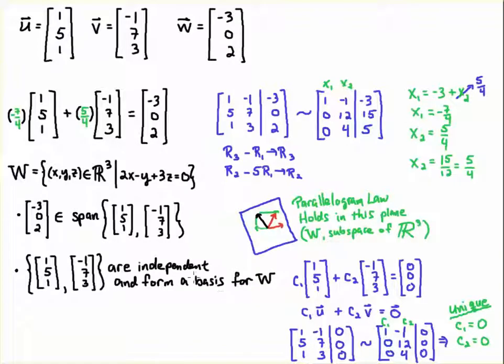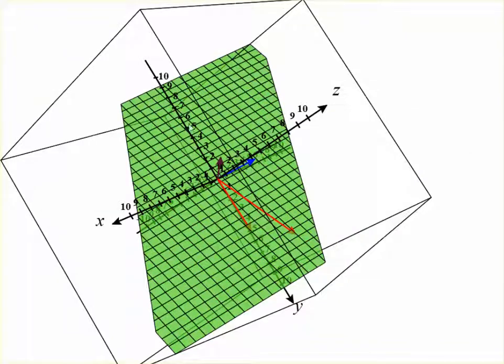But they can form a basis. Because they're independent, they form a basis for W. And so that means that any vector, not just the vector minus 302, but any vector in this plane can be written as a linear combination of these two vectors. That means we can always change the direction and rescale these vectors to create a parallelogram that makes any vector in this plane the diagonal of that parallelogram.